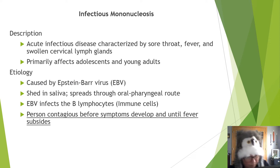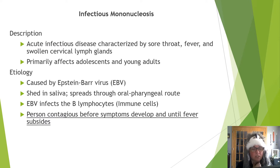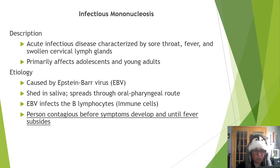IM — infectious mononucleosis. This is an acute infectious disease characterized by a sore throat, fever, and swollen cervical lymph glands — cervical referring to the cervical spine, so in the neck area. It primarily affects adolescents and young adults. It is caused by the Epstein-Barr virus, or EBV. This virus is shed in saliva and spread through oral-pharyngeal routes — teenagers sharing drinks and swapping spit are high traffic routes for spread. Some have called this the kissing disease.